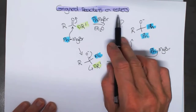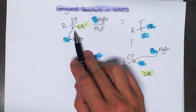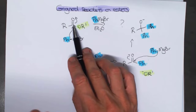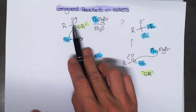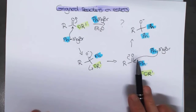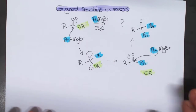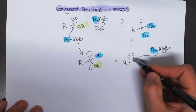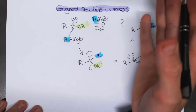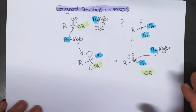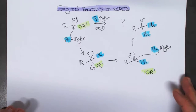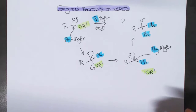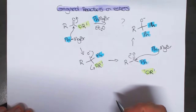Grignard reactions with esters react twice — they do a double addition — because the ester is actually not as reactive as the ketone. We've kind of seen this before: sodium borohydride will reduce ketones but not esters, because esters are not that reactive. This brings us to what we call the reactivity series for carbonyls.